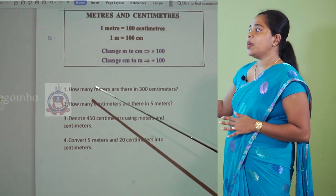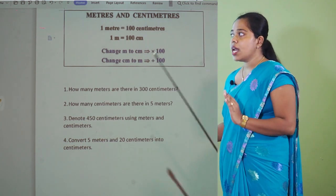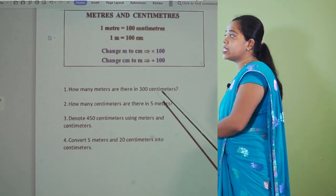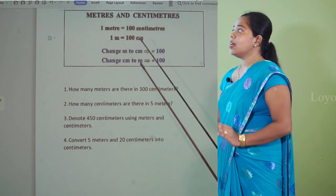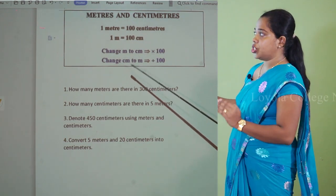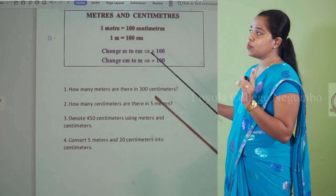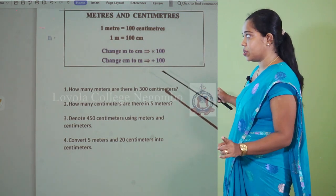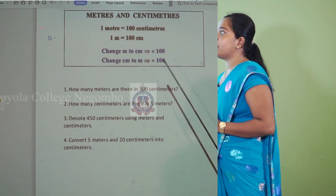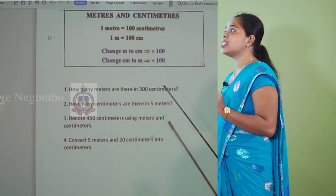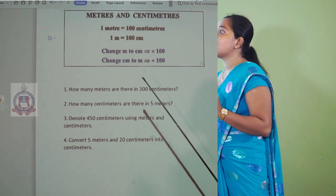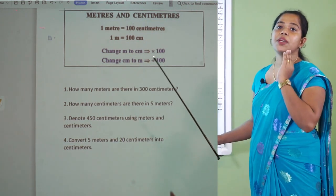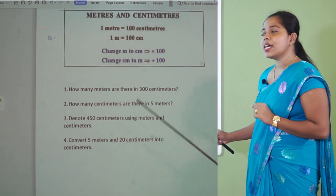First one: How many meters are there in 300 centimeters? They are asking for meters, so we need to convert centimeters into meters. You need to divide the given number of centimeters by 100. So 300 divided by 100 is 3. You must write 3 meters — 3 and simple m. Otherwise your answer will be wrong.